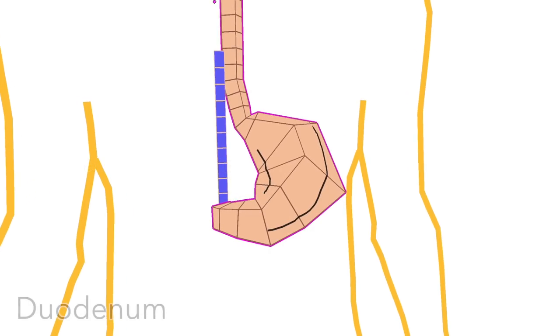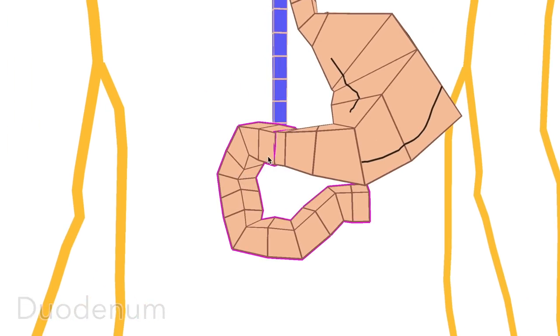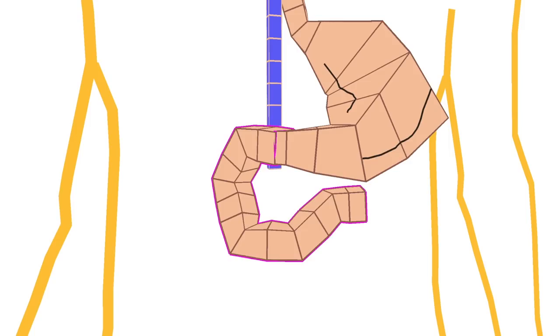It connects to the duodenum, which is more like a C-shape. The duodenum wraps around the head of the pancreas.